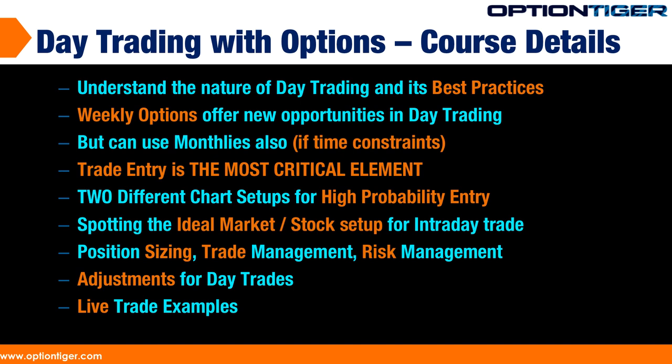Once your chart setups are configured for a high probability entry, you then look for the ideal market index or stock setup for an intraday trade. Every single day there is at least one, two, or three such high probability setups that come up in the market — sometimes even more when the market is very volatile. On any given normal day you should see at least one or two very high probability stock setups. With the combination of chart setups and ideal stock setup, we are increasing our probability even higher for a successful trade.